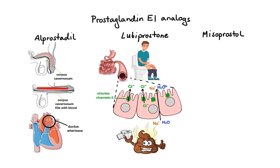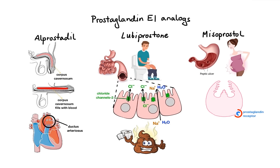The next prostaglandin E1 analog is misoprostol. Misoprostol is used to treat and prevent stomach ulcers, particularly in patients taking NSAIDs. It can also be used to induce labor. Misoprostol works by binding to the prostaglandin receptor on the gastric parietal cell and causing a decrease in intracellular cAMP, leading to decreased activity of the proton pump and thus modest inhibition of acid secretion.